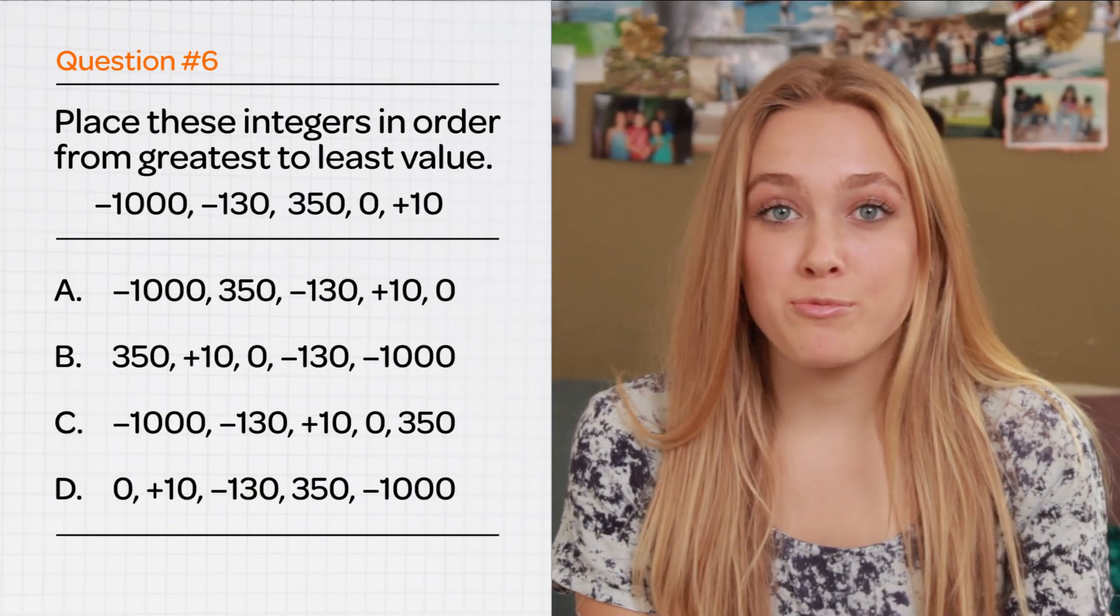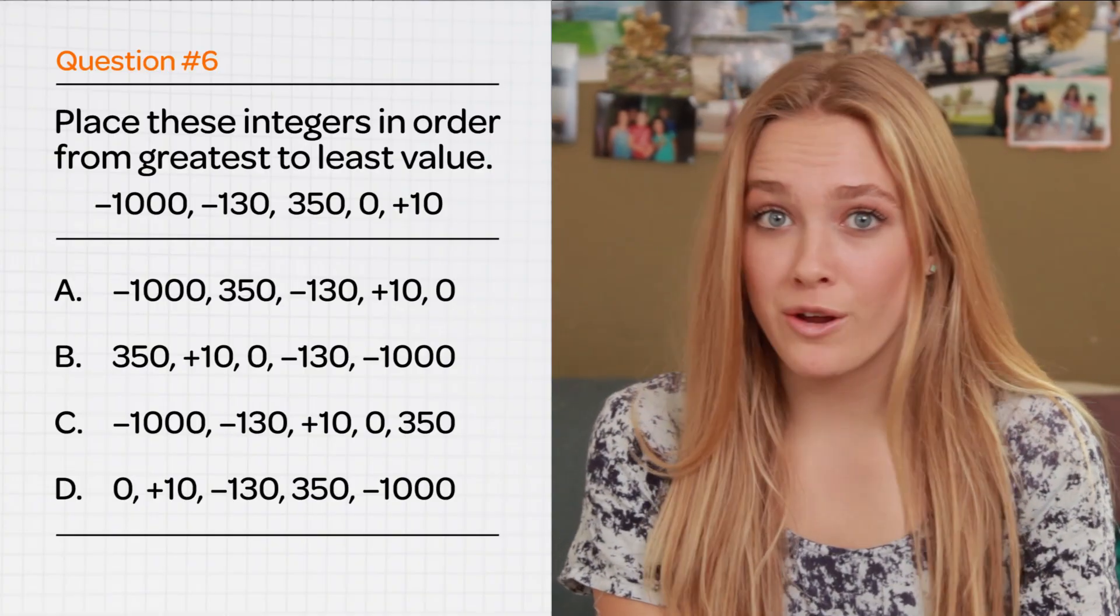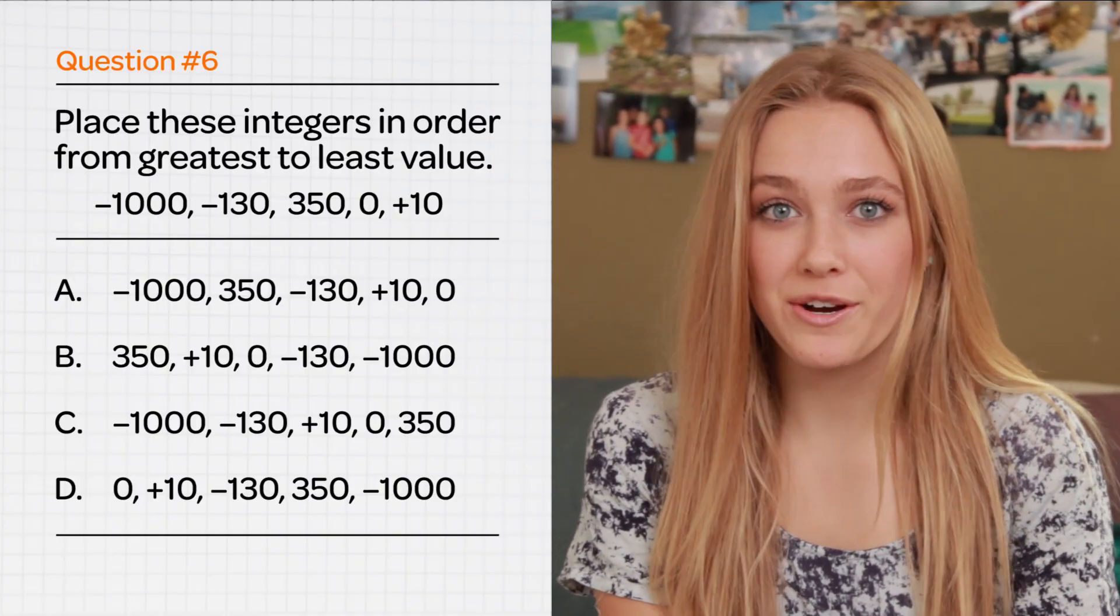Try putting these numbers in order from greatest to least value. Negative 1,000. Negative 130. 350. 0. 10.